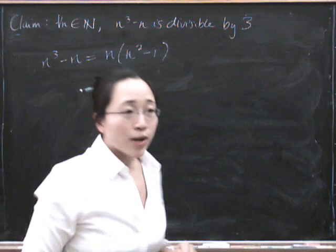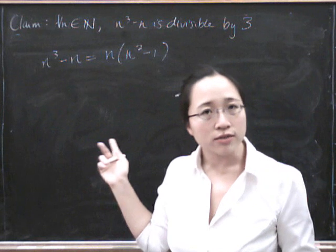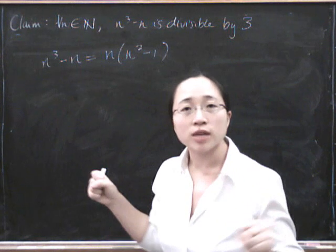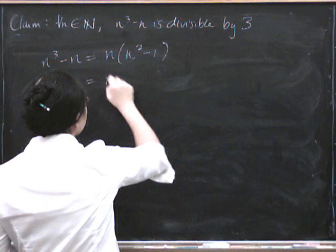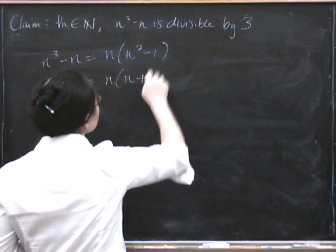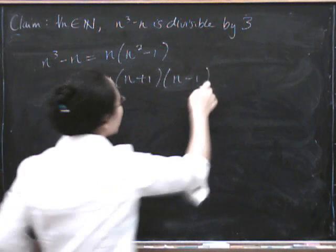And we know that n squared minus 1, it's a difference of two squares, right? So it's n plus 1 times n minus 1. So this is the same as n times n plus 1 times n minus 1.